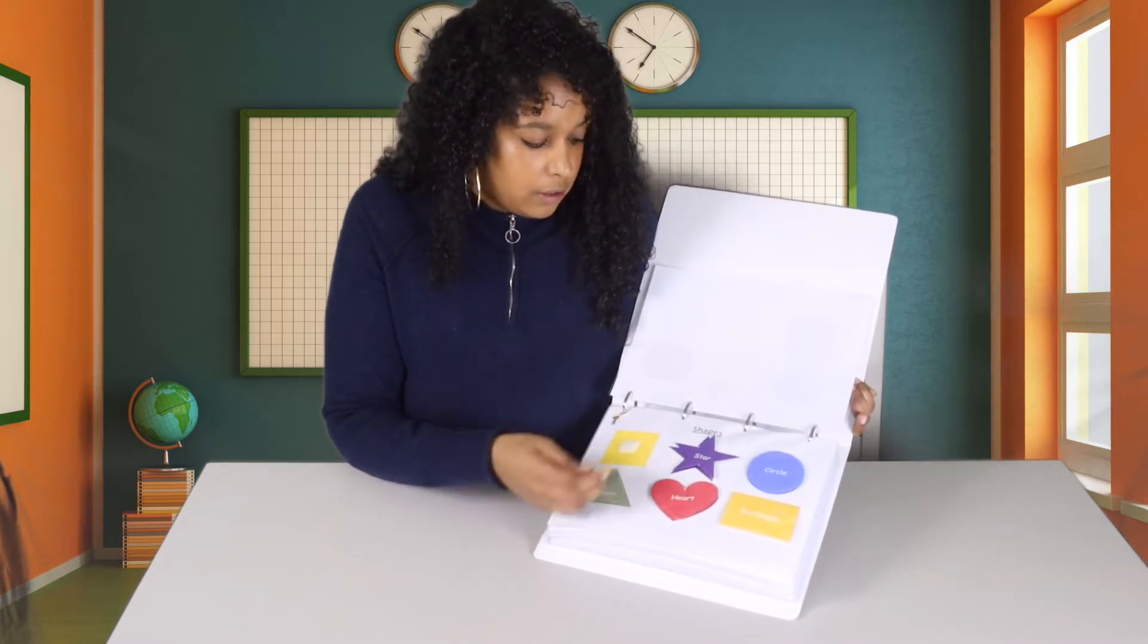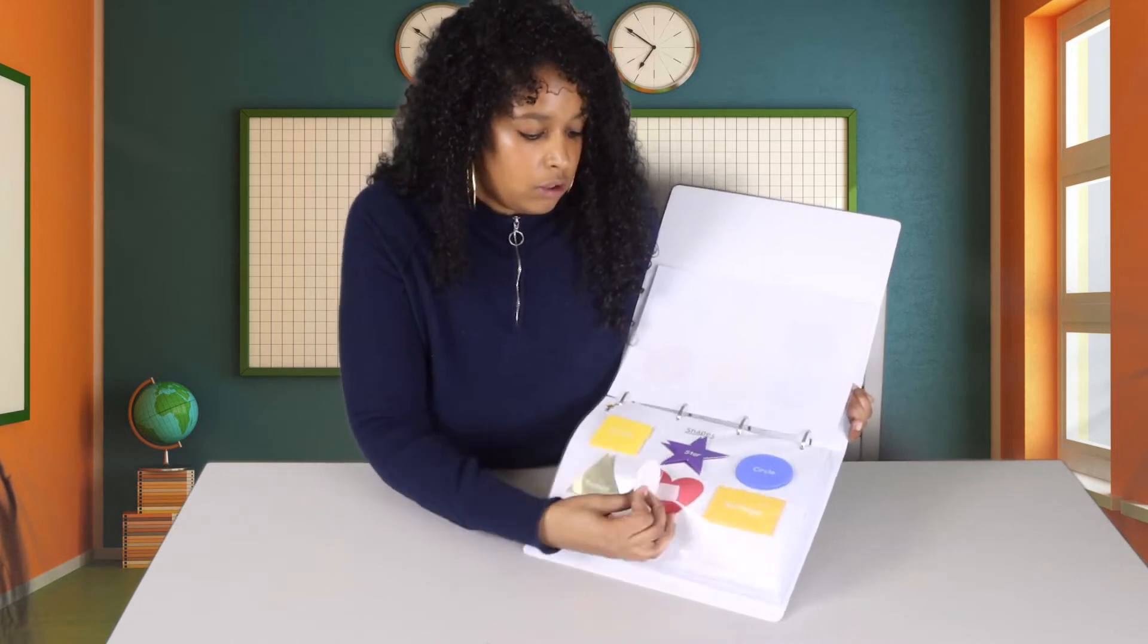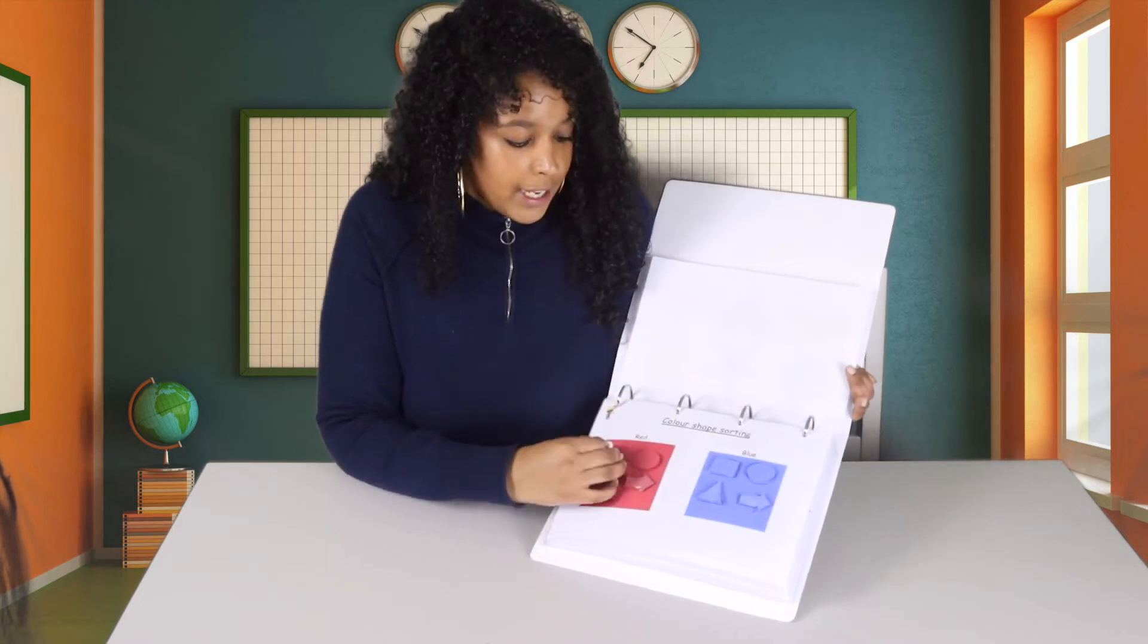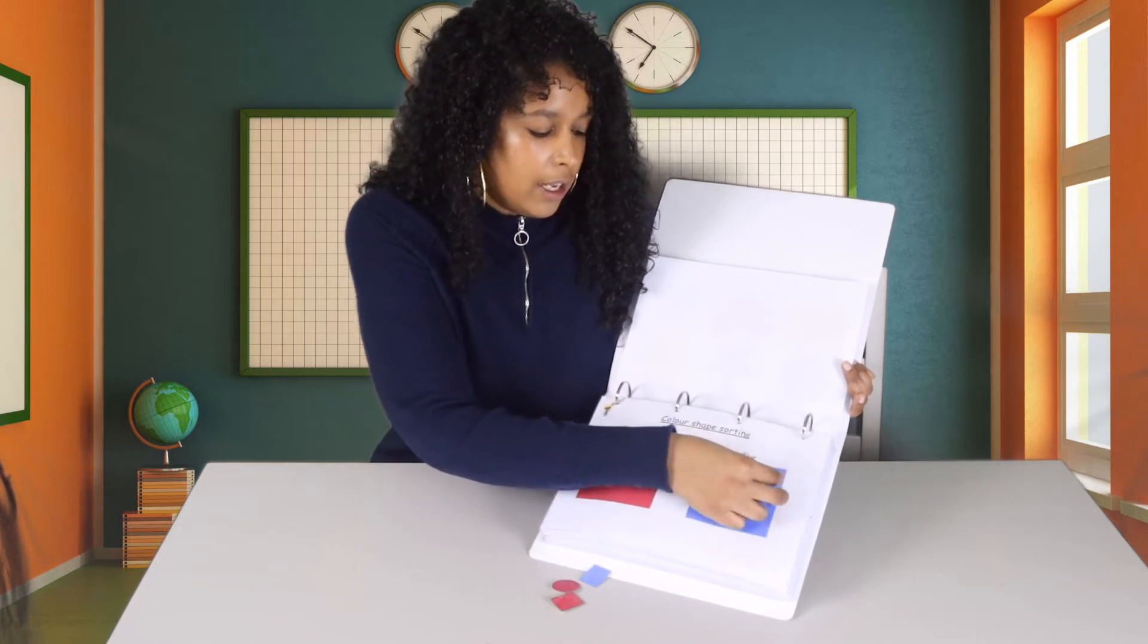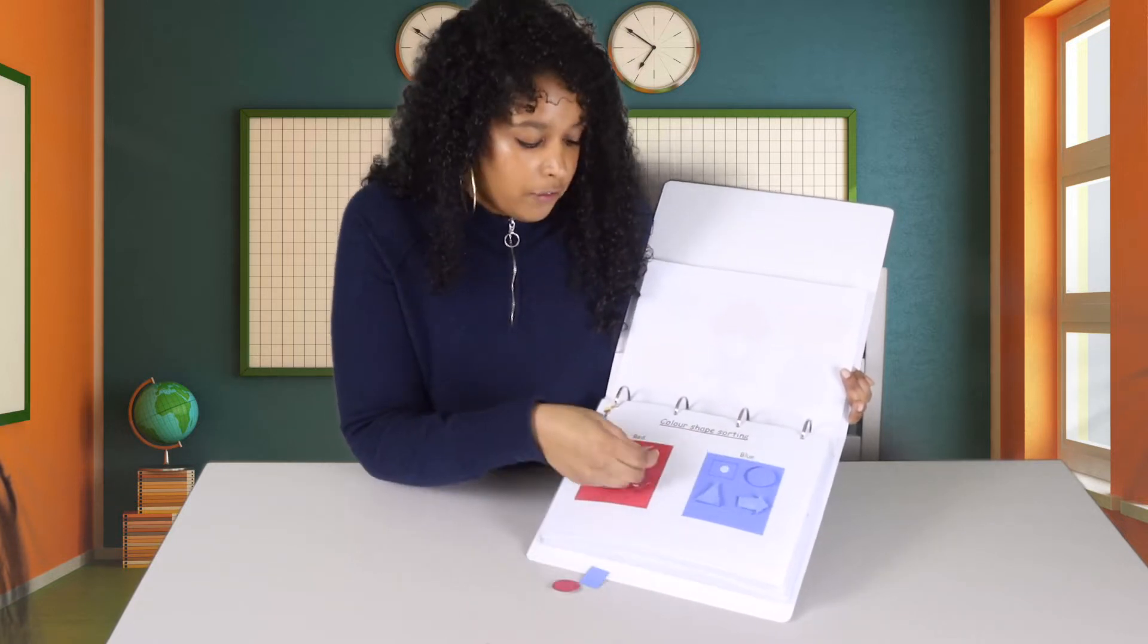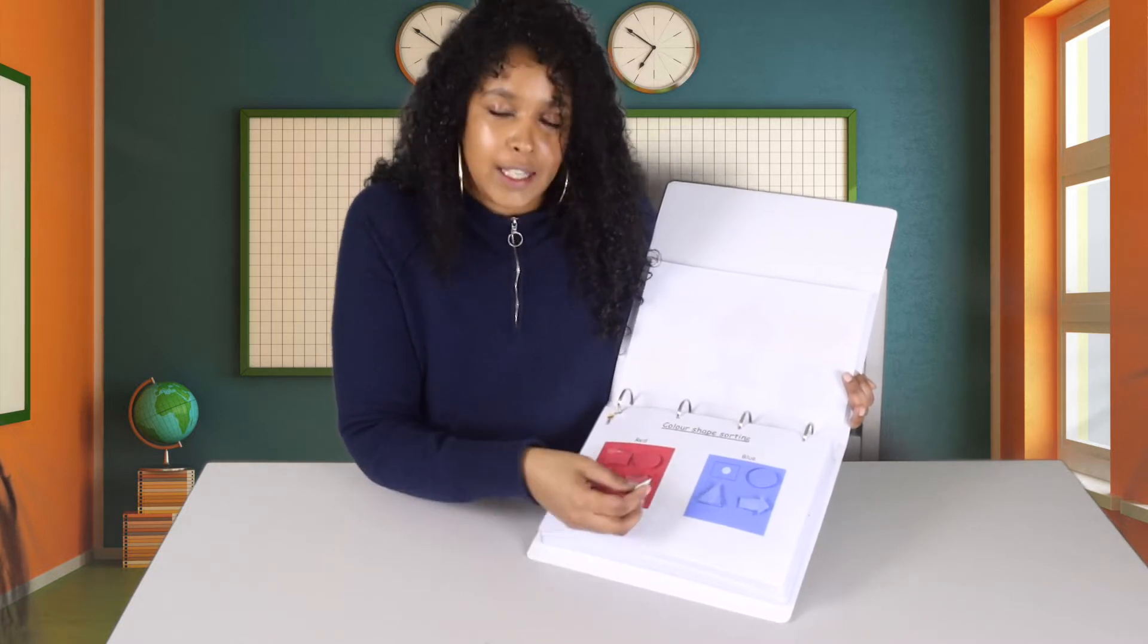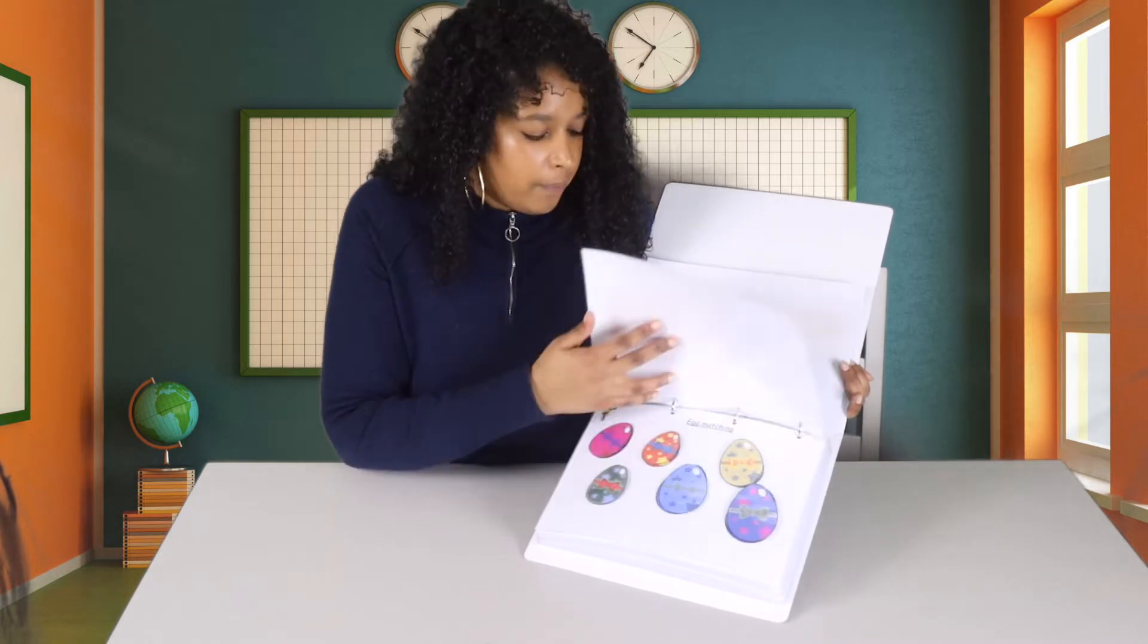He's my biggest critique. We also, being based in the UK, there isn't the availability of clear Velcro as easily available in America. So I've had to settle for white. Then we move on to shapes. So we have square, triangle, heart, rectangle, circle, and star. Next we have some sorting. Same shapes, two different colours.